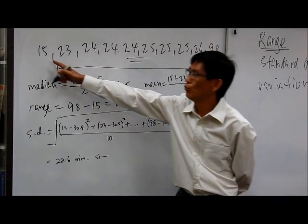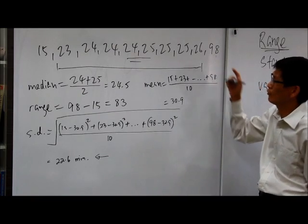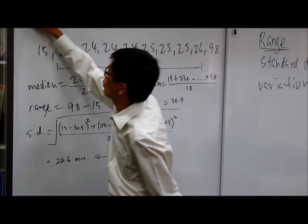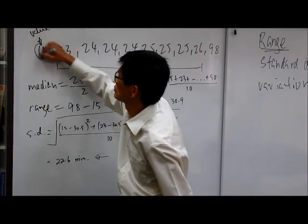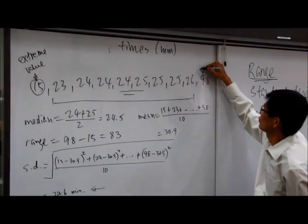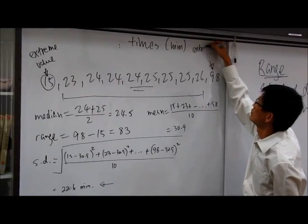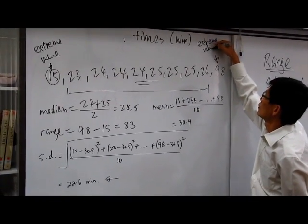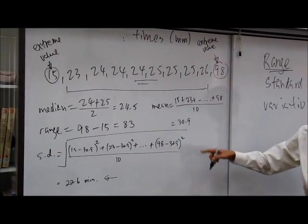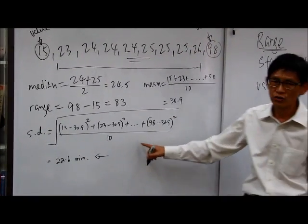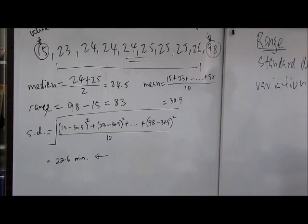So this standard deviation is not very useful in a situation like this, when there are two values, one very small and one very large. We call these extreme values. Although standard deviation is one way of measuring dispersion, it is not very useful in this case.